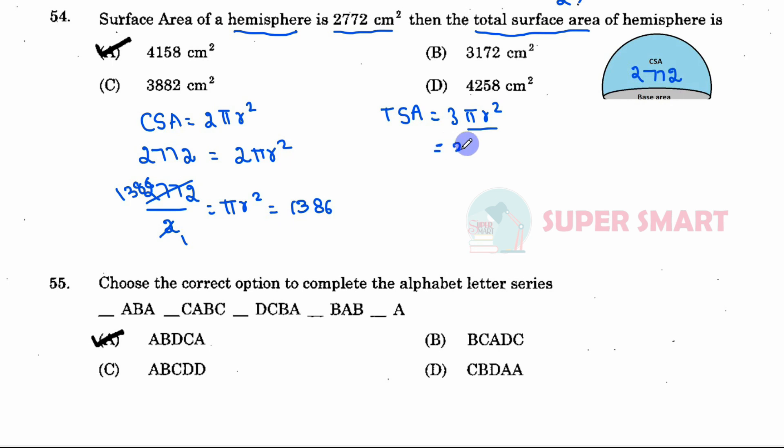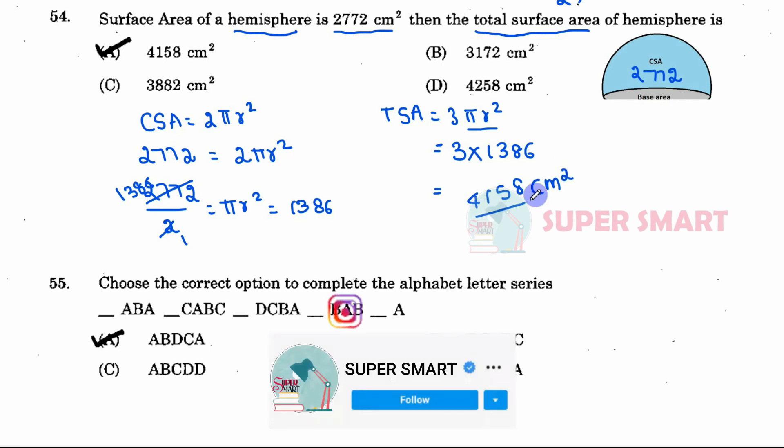Now for the total surface area, the formula is 3 into πr². We substitute the value of 1386. So 3 times 6 is 18, 3 times 8 is 24 plus 1 is 25 carry 2, 3 times 3 is 9 plus 2 is 11 carry 1, 3 times 1 is 3 plus 1 is 4. So 4158 cm² is the answer. Option A is the answer.